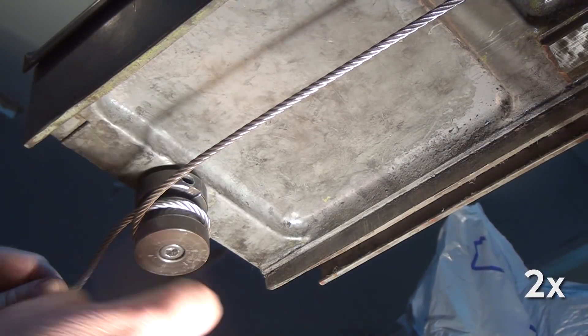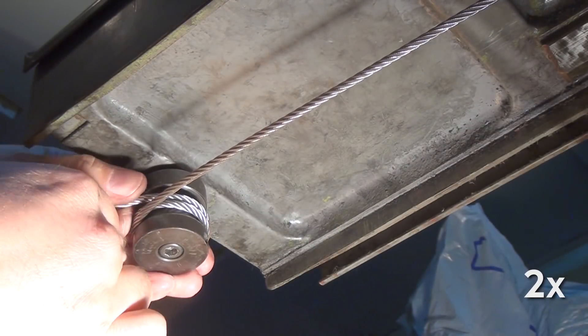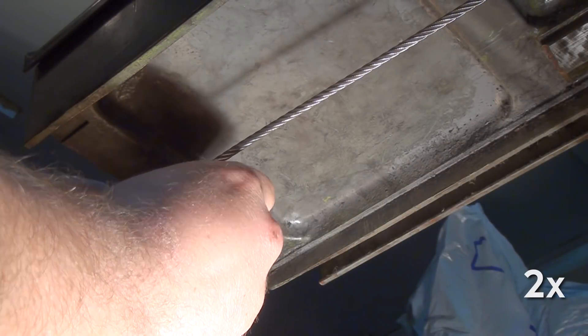So I think I ended up with two full wraps around the drum. And in the picture in the parts manual, it showed three wraps. But this ended up working out pretty well.